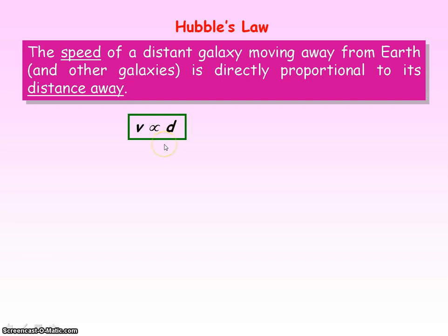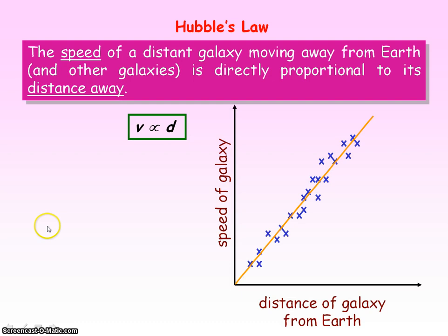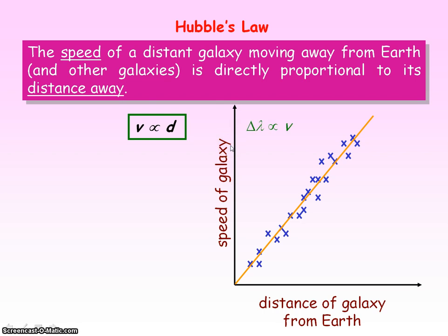We can express Hubble's law mathematically. If we plot a graph of the speed of the galaxy against its distance from Earth, we get a straight line through the origin. The speed of the galaxy is found from the redshift of the light from these galaxies using the Doppler shift equation.